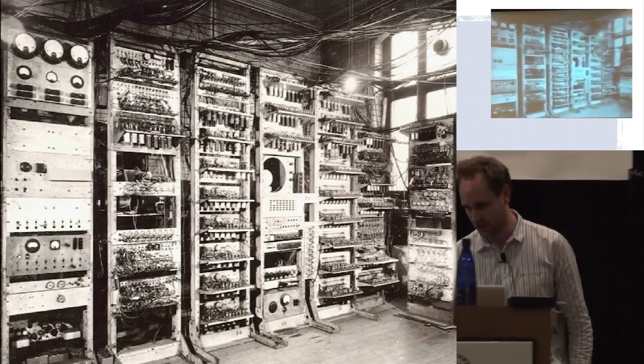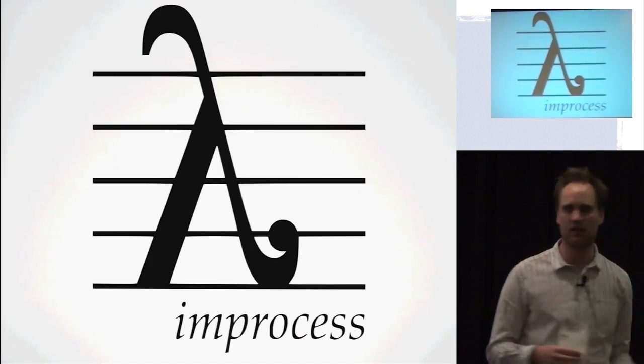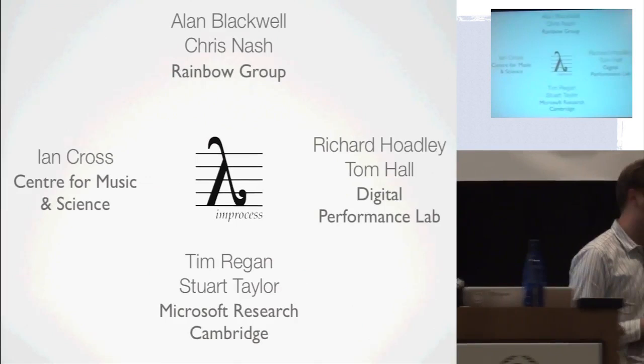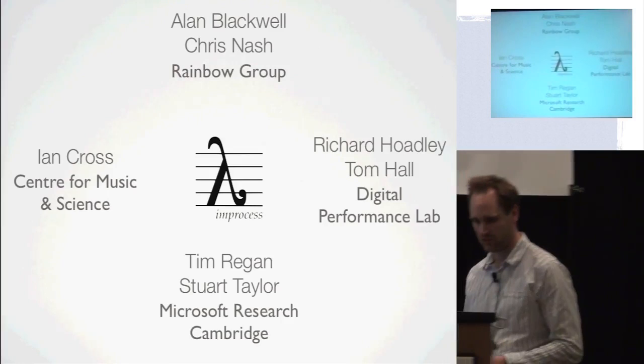I started a project called Improcess, which is to try and combine improvisation and process. We were combining music with Lambda — the music symbol is extremely similar to that, so it was obviously a good idea. It was a combination of multiple people working on the project. So what are the questions we've asked? What's the end goal? How can we get from boring black sheets into something much more interesting and impressive?